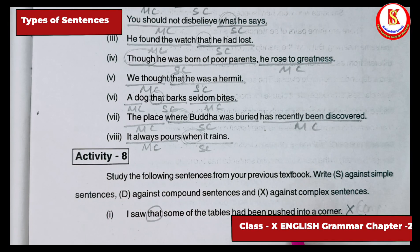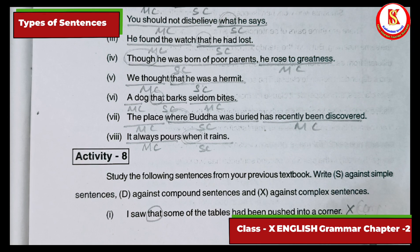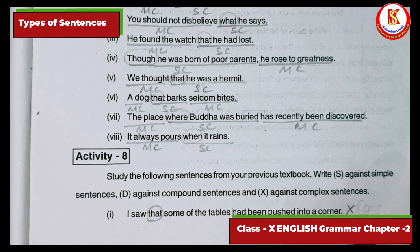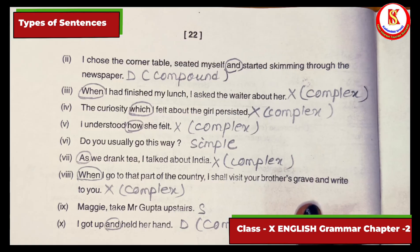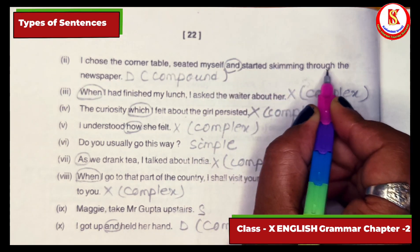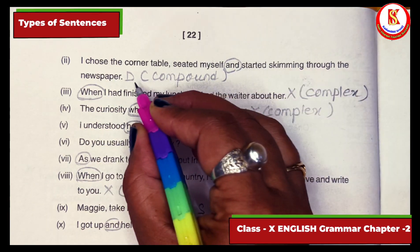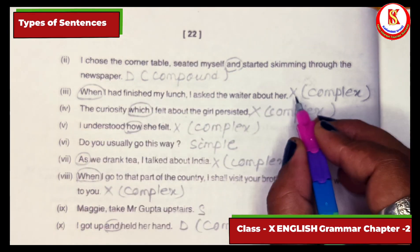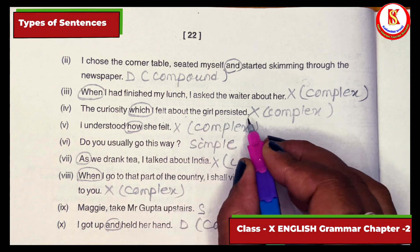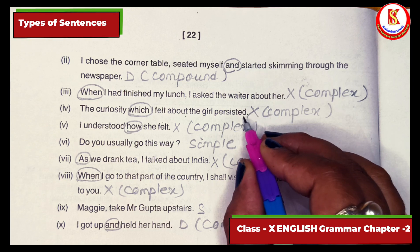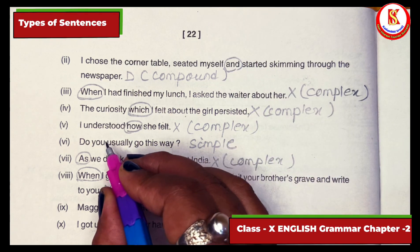Next: identify whether each sentence is simple, compound, or complex. 'I saw that some of the tables had been pushed into a corner' — 'that' is present, so it is a complex sentence. 'I chose the corner table, seated myself and started skimming through the newspaper' — 'and' is present, so it is a compound sentence. 'When I had finished my lunch, I asked the waiter about her' — 'when' makes it complex. 'The curiosity which I felt about the girl' — 'which' makes it complex.